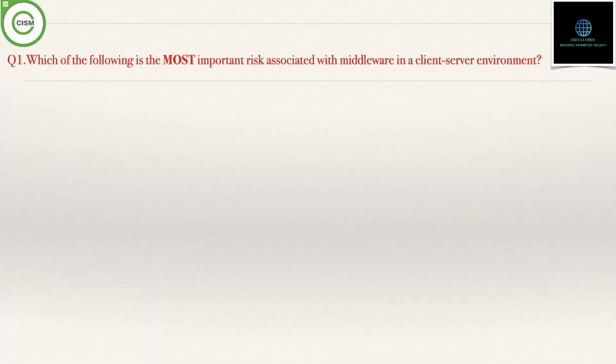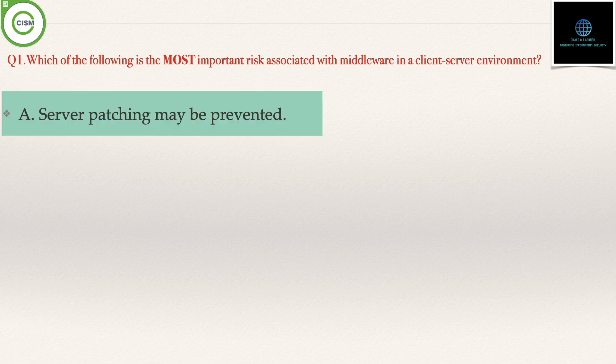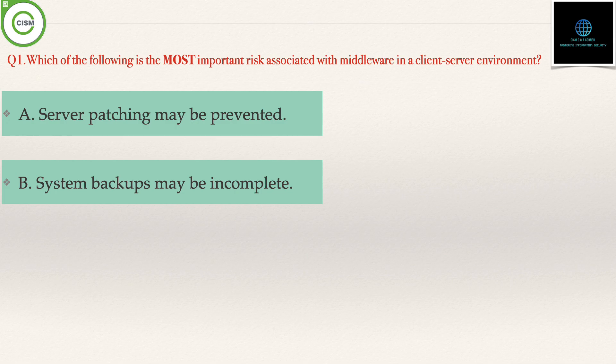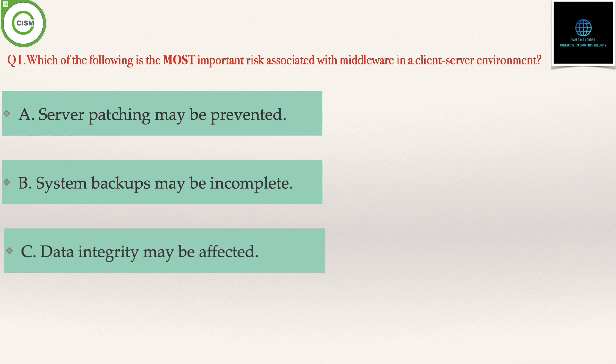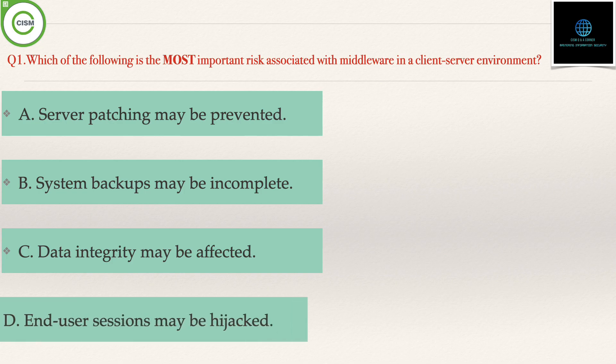The first question states: which of the following is the most important risk associated with middleware in a client-server environment? The options are: Option A, server patching may be prevented; Option B, system backups may be incomplete; Option C, data integrity may be affected; and Option D, end user sessions may be hijacked.